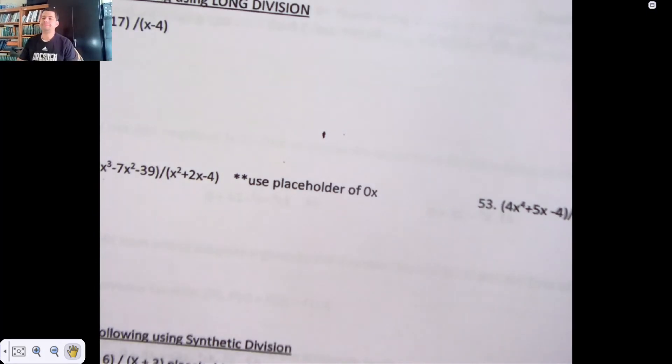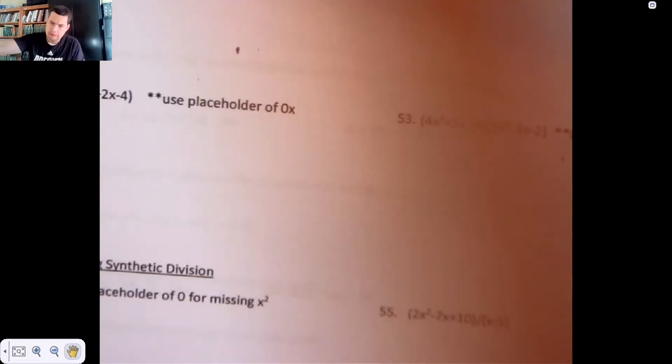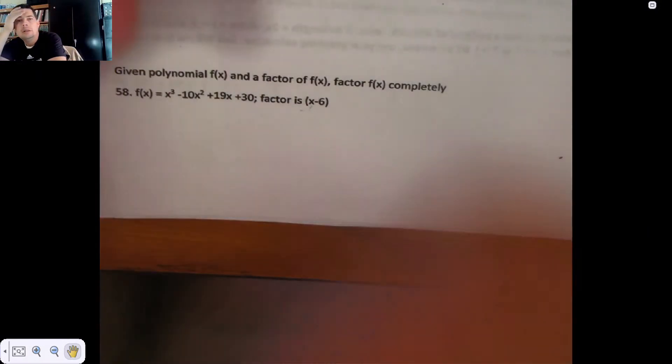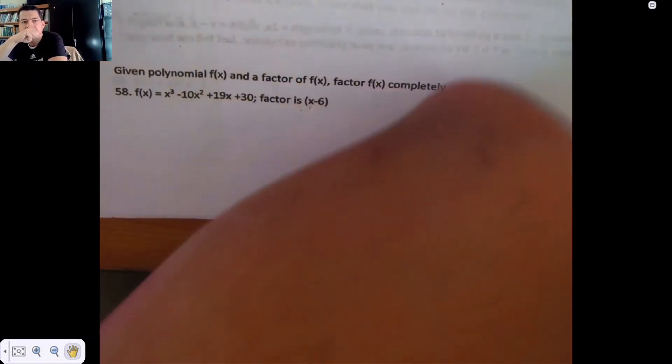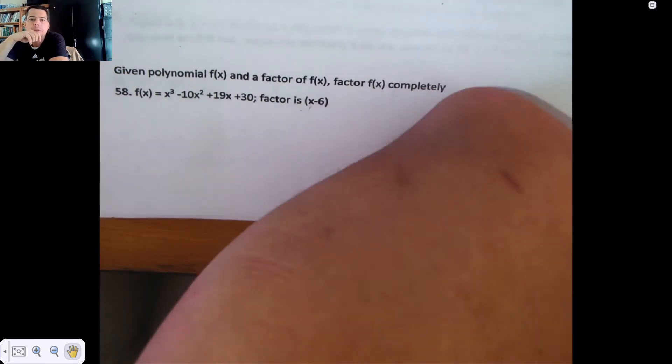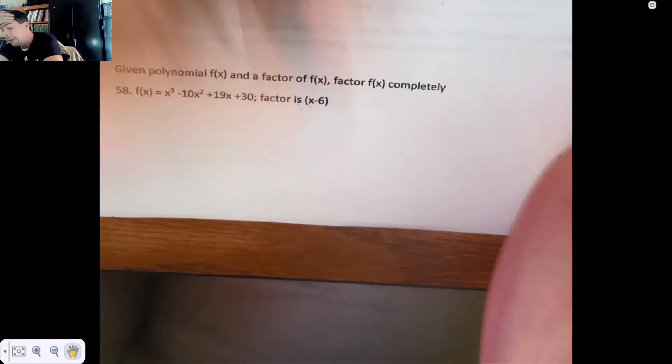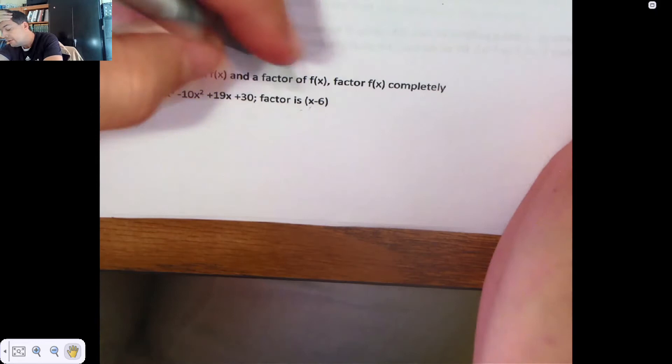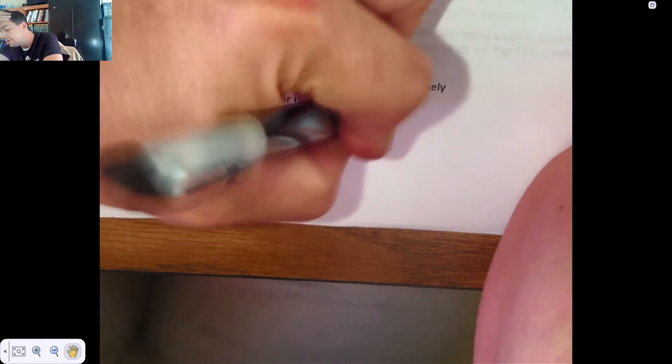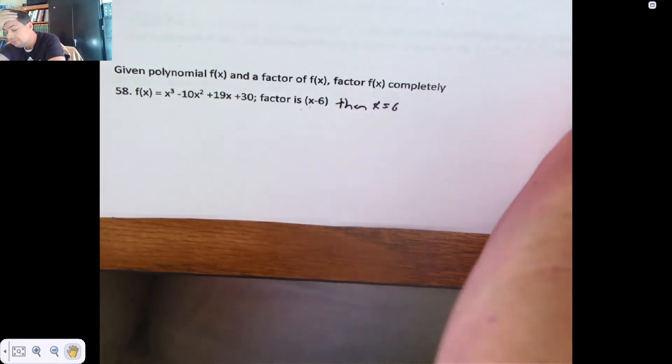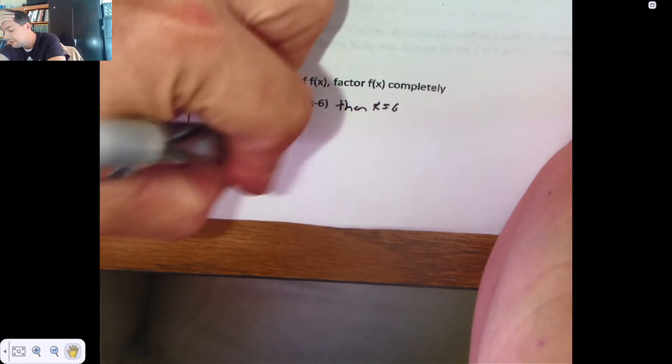Alright, some more homework. Problem 58: your total factor of this polynomial is x minus 6. And if x minus 6 is a factor, then x is 6. So we're going to synthetically divide that 6 out.